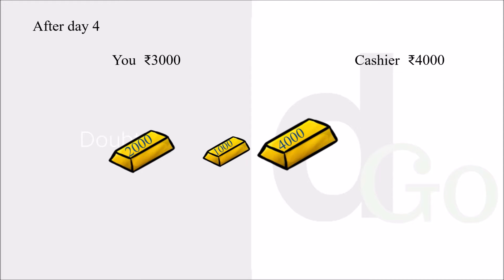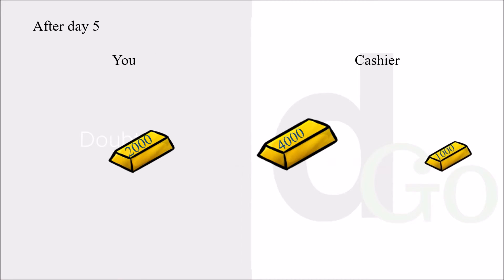Now you have Rs.3000 and the cashier has Rs.4000. After day five, you give the one thousand gold bar to the cashier. Now you have just Rs.2000 and the cashier has Rs.5000. You should see that the amount the cashier has is increasing at the rate of Rs.1000 per day, so you pay Rs.1000 every day.